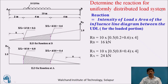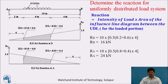To determine the reaction for a uniformly distributed load system: the reaction is found by multiplying the intensity of load by the area of the influence line diagram covered by the UDL. Draw the ILD for RB, take the starting and ending ordinate values under the UDL, and calculate the trapezoidal area using: area = one-half × (sum of parallel sides) × height. Multiply this area by the intensity of load (10 kN/m) to get reaction RB. Similarly, area × intensity gives reaction RA.